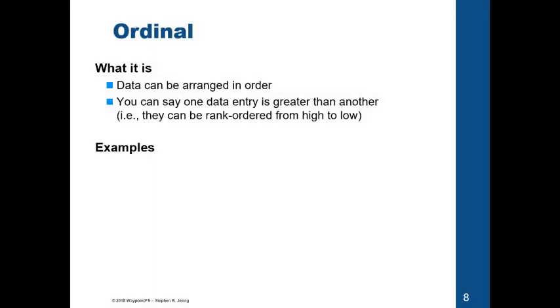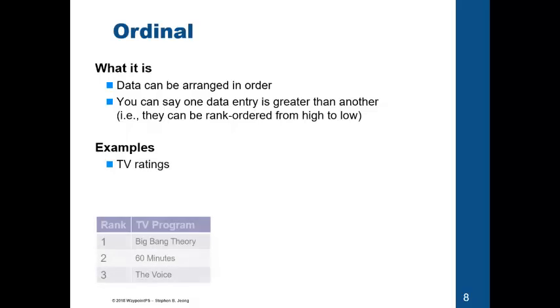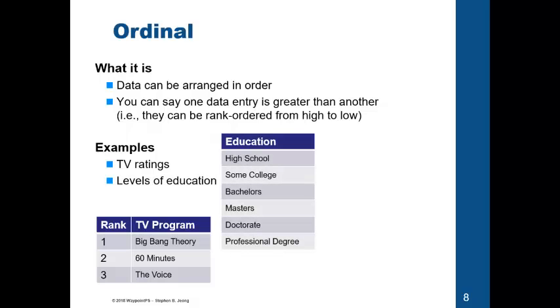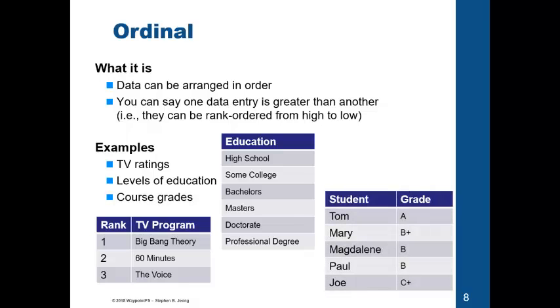Now, next level of measurement, we can order from high to low. We can order the data from low to high, or high to low, and say that one data entry is greater than another. If you think about TV ratings, we can say that Big Bang Theory is getting more audience views, or more popular than 60 Minutes, 60 Minutes more popular than The Voice. Level of education, same thing. We can say that masters requires greater level, or more years of education than bachelors, more than some college, and high school. Course grades are the same thing. A, B plus, B, and C plus.